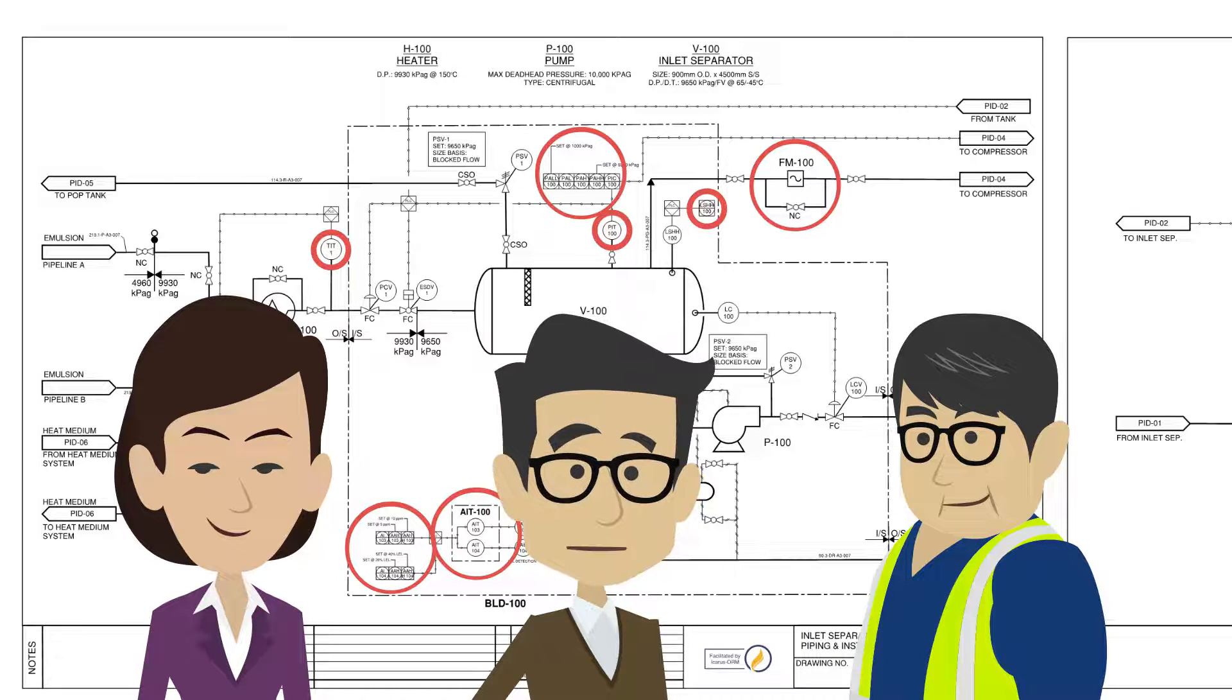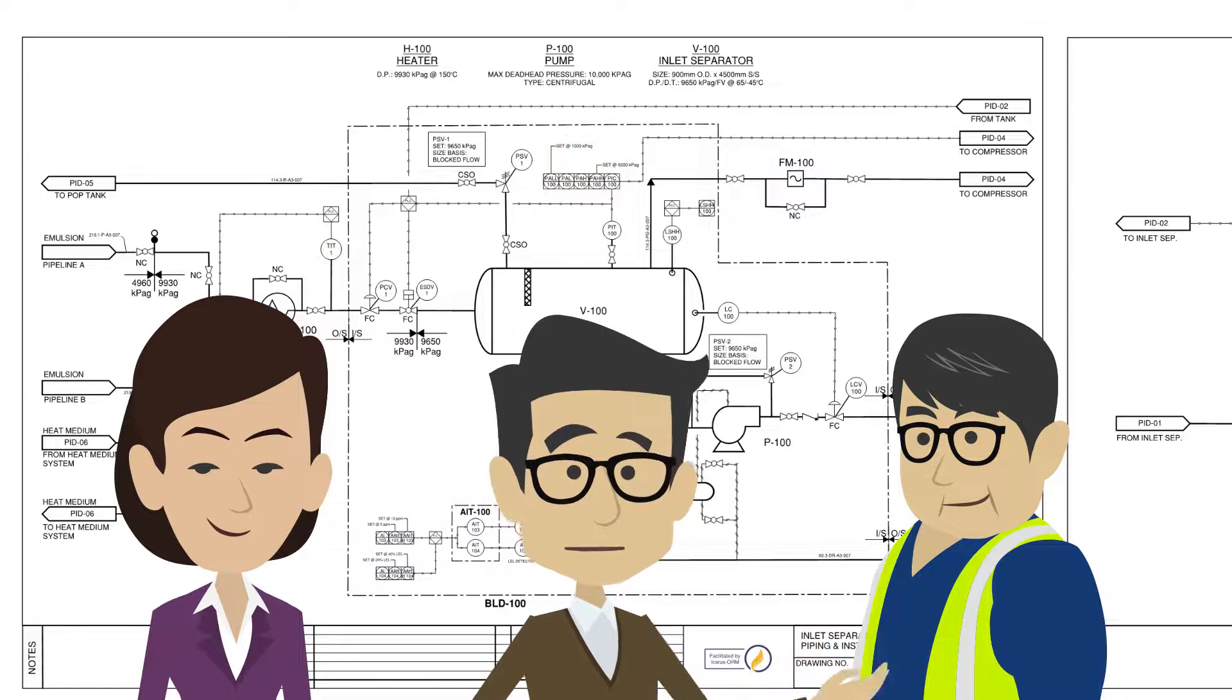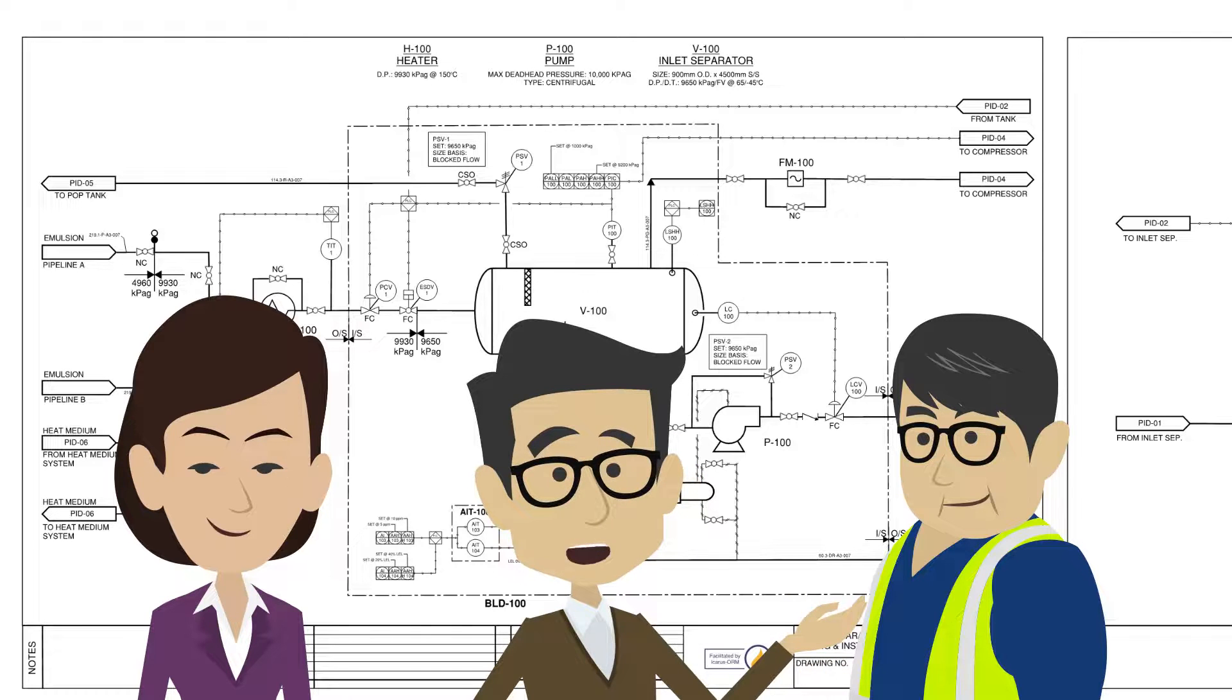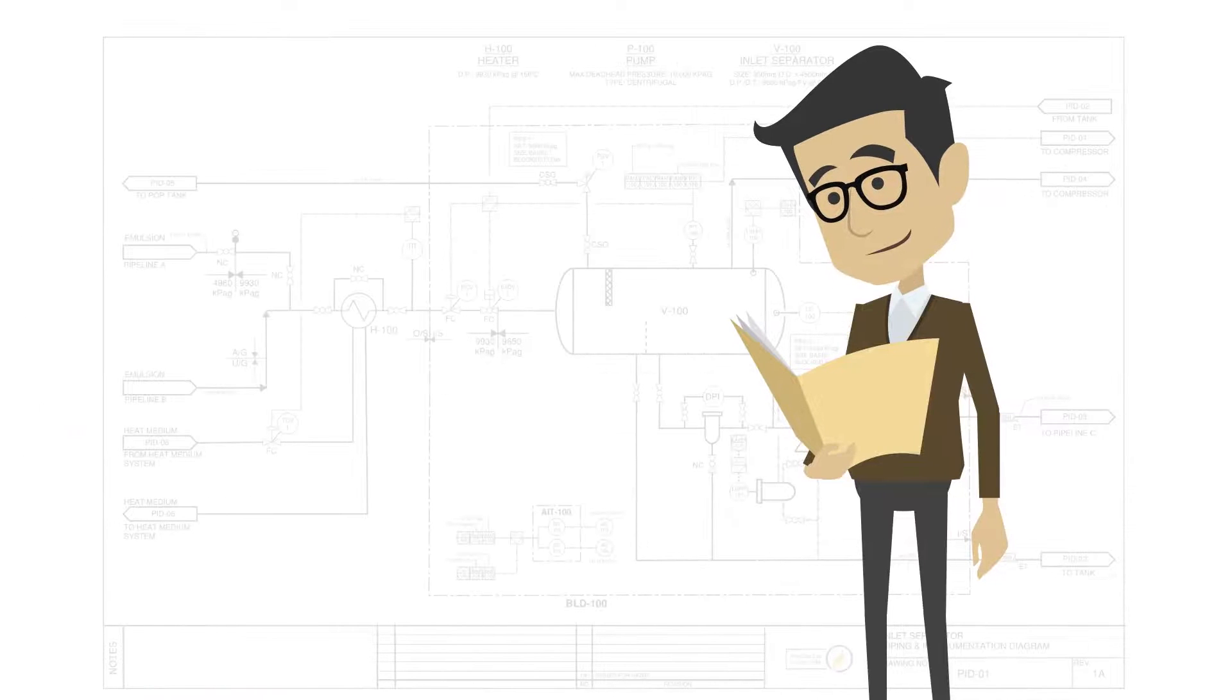However, the actions are not usually outlined. Understanding how these components operate and the actions they take are imperative in assessing safeguards for a safe design. It is important to ask questions if you need additional information. Walking through the PNIDs prior to a HAZOP can help the meeting run smoothly while ensuring all possible points of failure are identified.